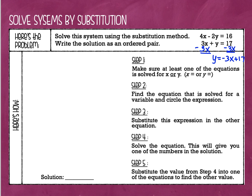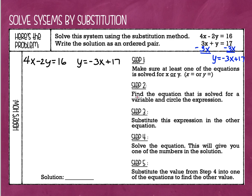Now I'm ready to use the substitution method. I'm going to write the two equations next to each other: 4x minus 2y equals 16, and right next to it, the equation I just solved for y — y equals negative 3x plus 17. I like to write them side by side so you can see where I am substituting. This is step two: find the equation that is solved for a variable and circle the expression. Here's the one that's solved for y — I'm going to circle the expression.